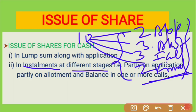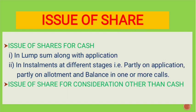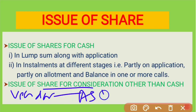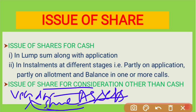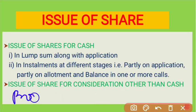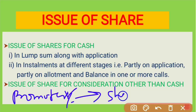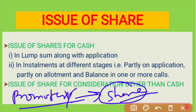In different stages, different entries will be passed in the books of the company. The next condition is issue of share for consideration other than cash — where the company issues shares to settle different other transactions.